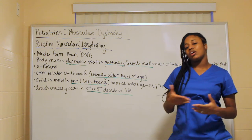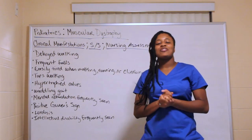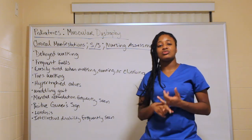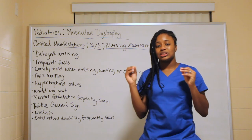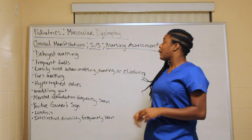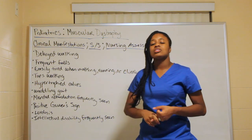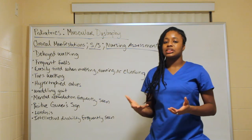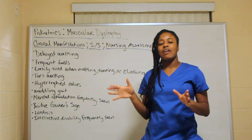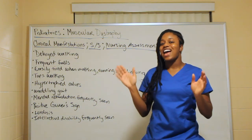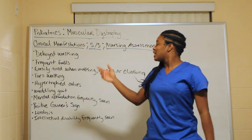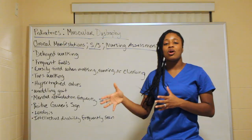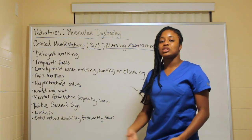The clinical manifestations — signs and symptoms — for both Duchenne and Becker's are very similar. You will see delayed walking, frequent falls, and they are easily tired when walking, running, or climbing. They tend to be toe walkers, and they have hypertrophied calves that look bigger than normal.